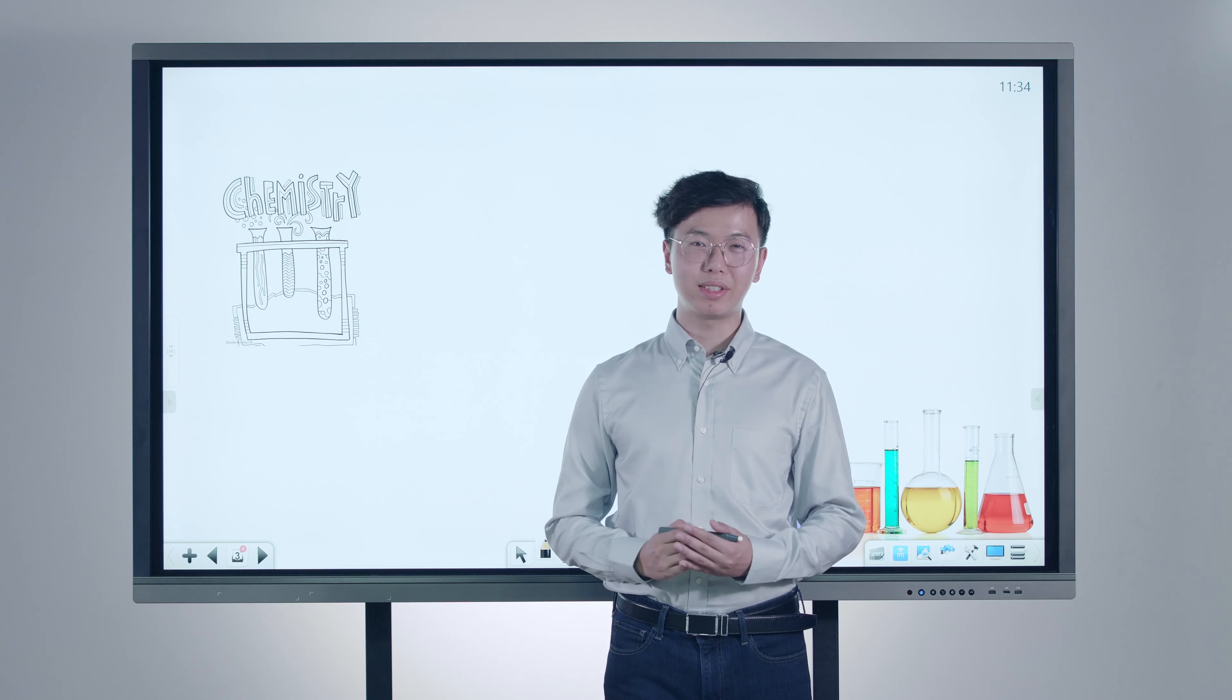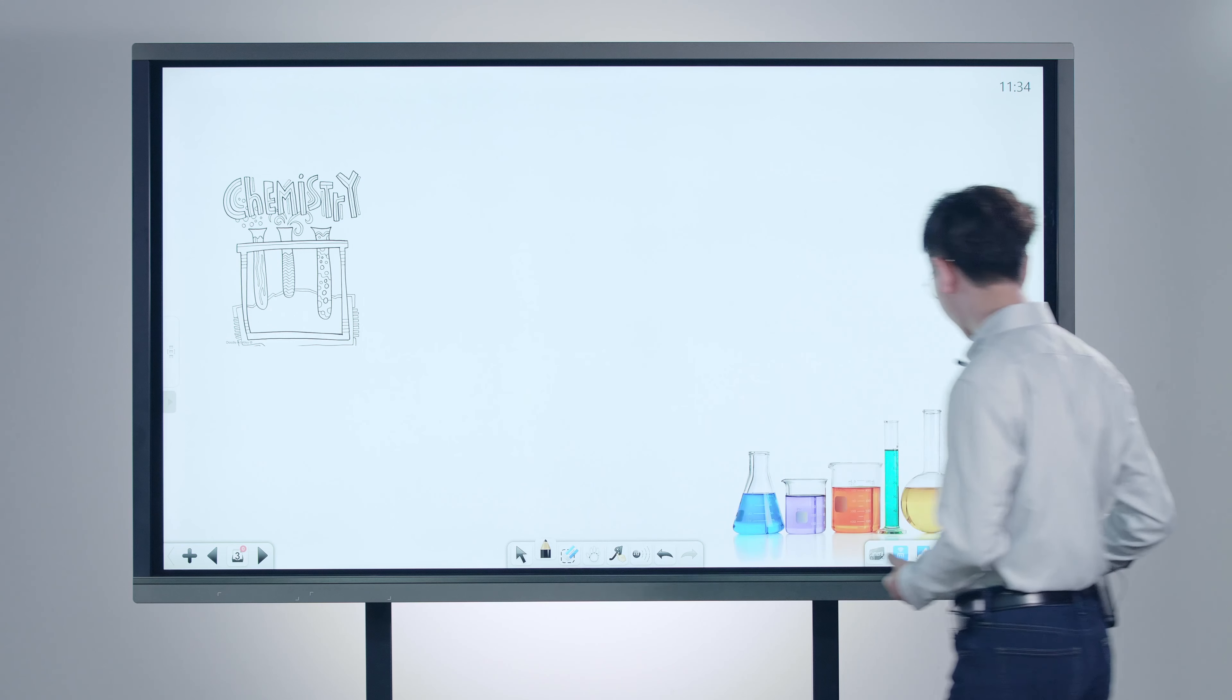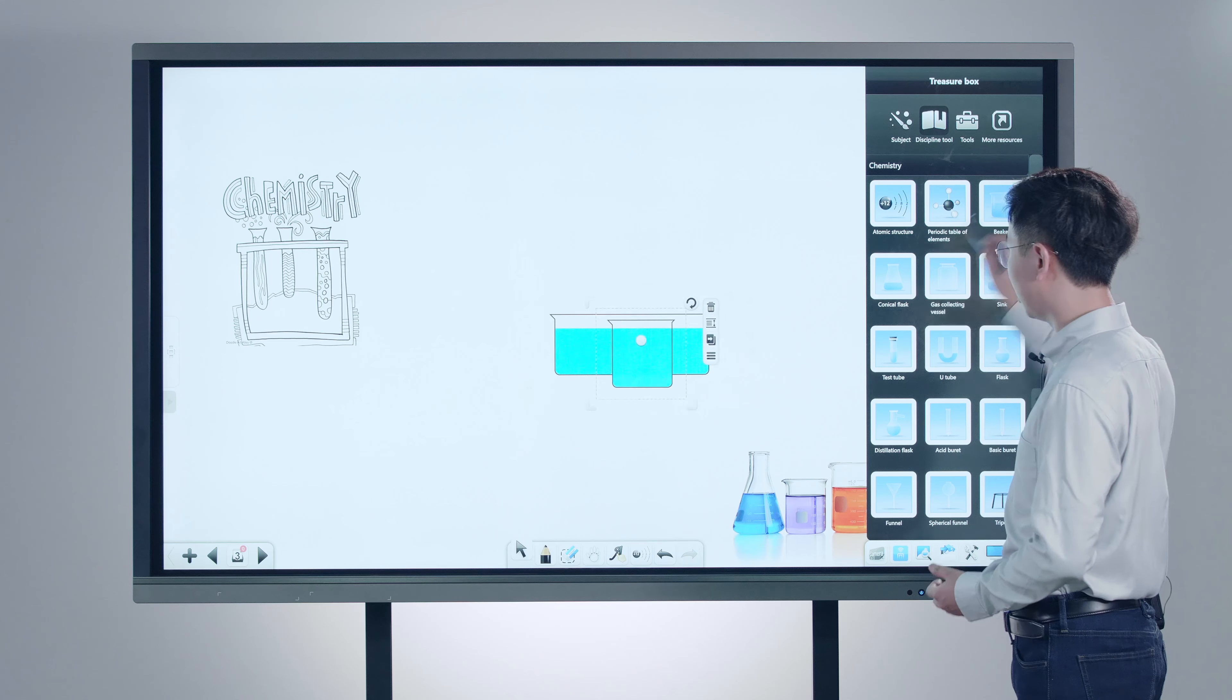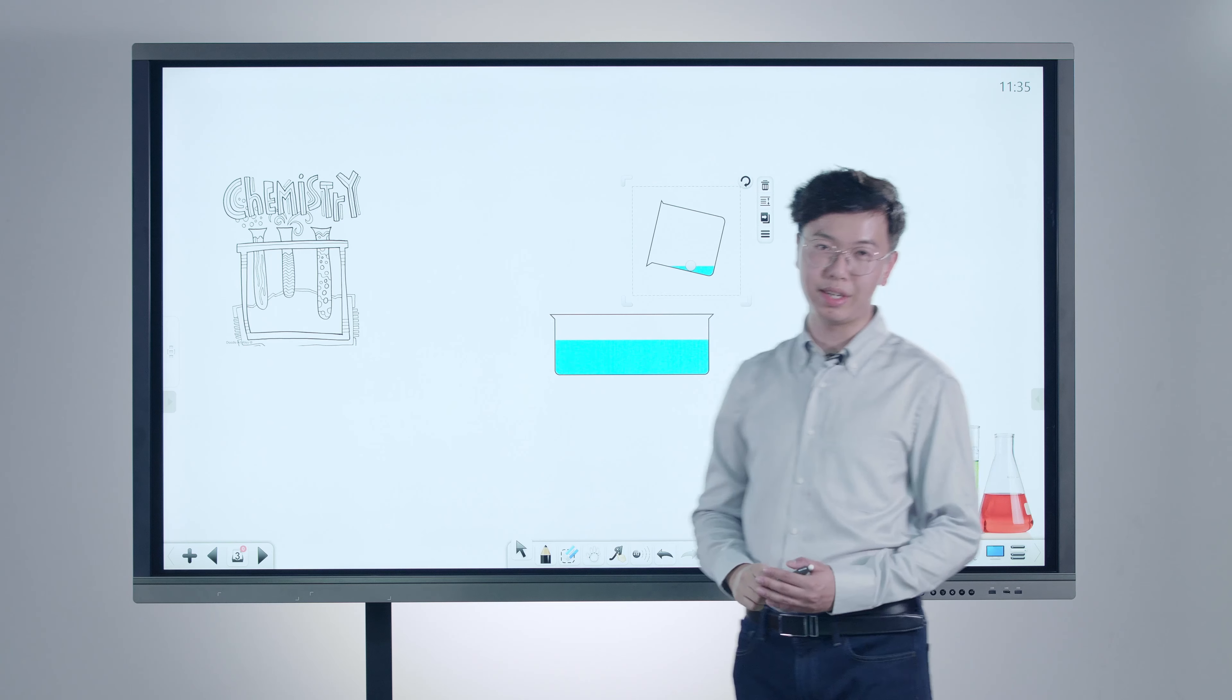In the chemistry class, Node also provides a variety of experimental tools, like a sink and a beaker. We can adjust the volume respectively and pour out the liquid between different containers.